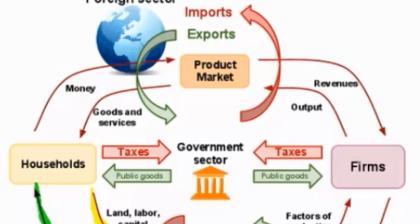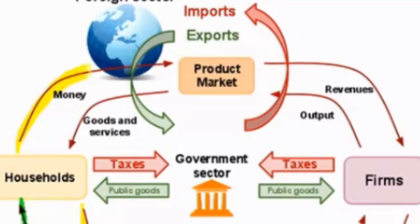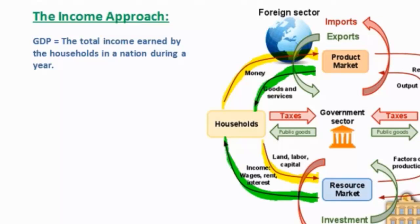Let's look in the product market now. Households spend money in the product market, for which they receive goods and services. Of course, households are not the only ones consuming a nation's products. Firms also consume products in the form of capital goods, and governments consume products in the form of infrastructure goods, services such as healthcare, education, and national defense. Let's go into more detail about the income approach and find out how we can determine total GDP by breaking down the different types of income earned by households.